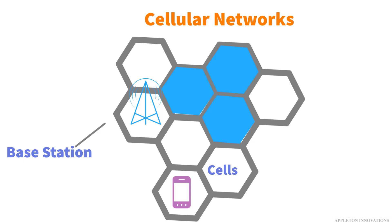With cells overlapping each other, no matter where you are, you fall under the range of a cell and hence a cellular network. There is a base station that lies at the center of a group of cells and works as a hub — not for the entire network, but just for that piece of the network.